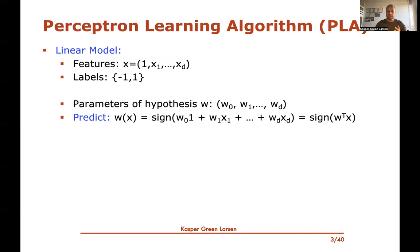If we feed it new data it's going to fairly accurately predict the label of the unknown target function on that new data. That's the general supervised learning setup. We also saw the perceptron learning algorithm, a linear model where data elements have features x1 to xd, a hard-coded one on the first coordinate, and labels are minus one or plus one.